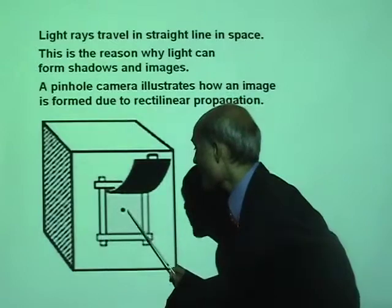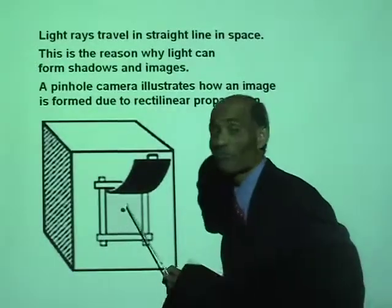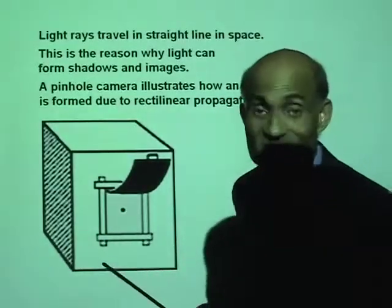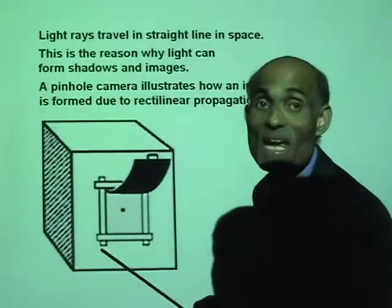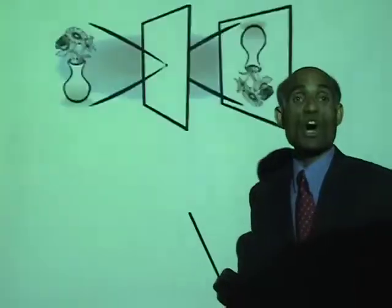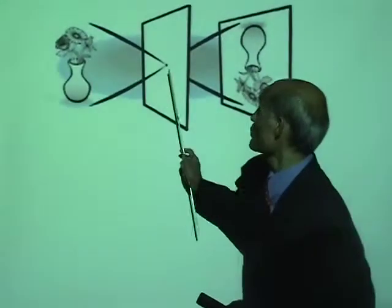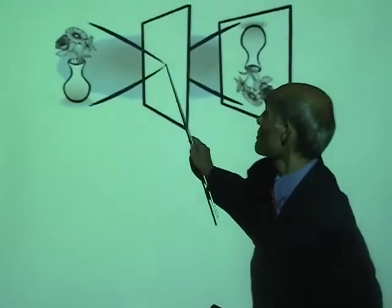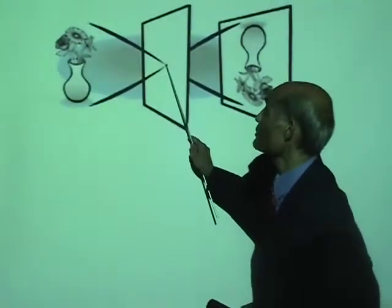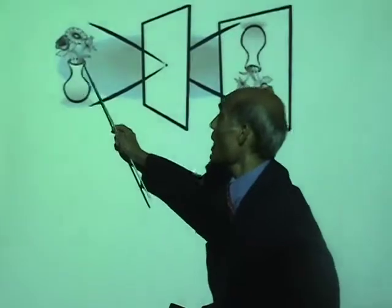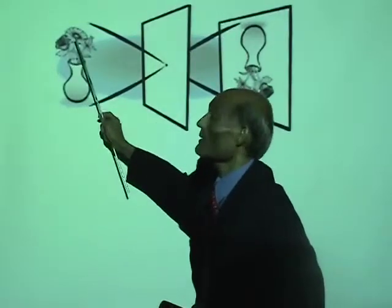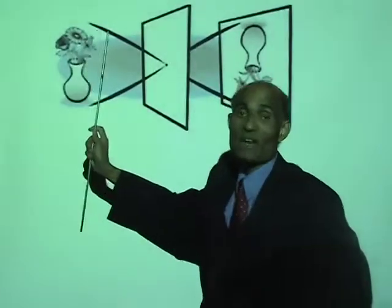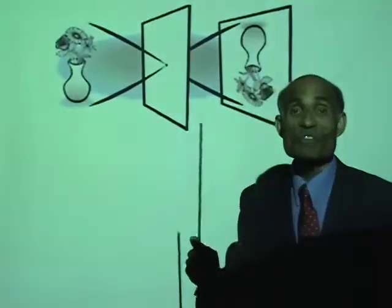If you keep an object in front, you can actually see the image on that screen. This is the pinhole that you constructed — you keep an object there. And I want you to now appreciate the meaning of rectilinear propagation.